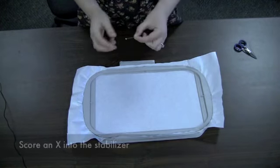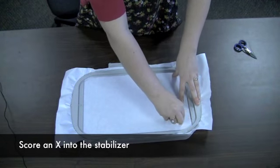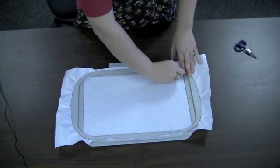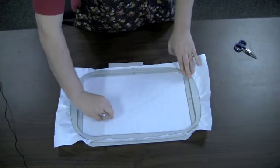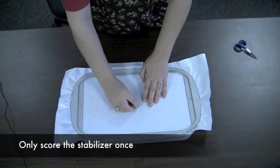Next, use a straight pin or a dull sewing machine needle to score an X on your stabilizer. I'm just going from corner to corner. Only score once or else you may go through the stabilizer.